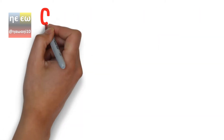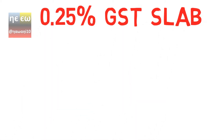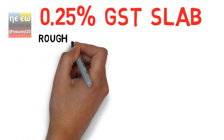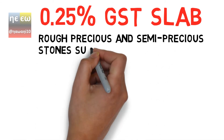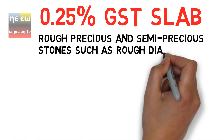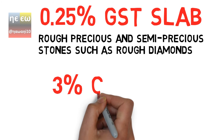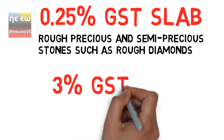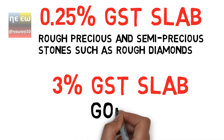In the 0.25% GST slab, 0.25% tax will be imposed on rough precious and semi-precious stones such as rough diamonds. In the 3% GST slab, 3% tax will be imposed on gold.